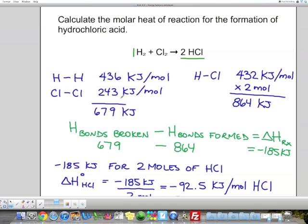For this bond here, the value is 243 kilojoules of energy per mole of Cl2. And again, I have one mole of Cl2 in this equation. So if I add up my two amounts, I get a total of 679 kilojoules for the reactant. So if I wanted to break all those bonds, the total would be 679 kilojoules of energy that I would have to supply to the reactants to break all their bonds.